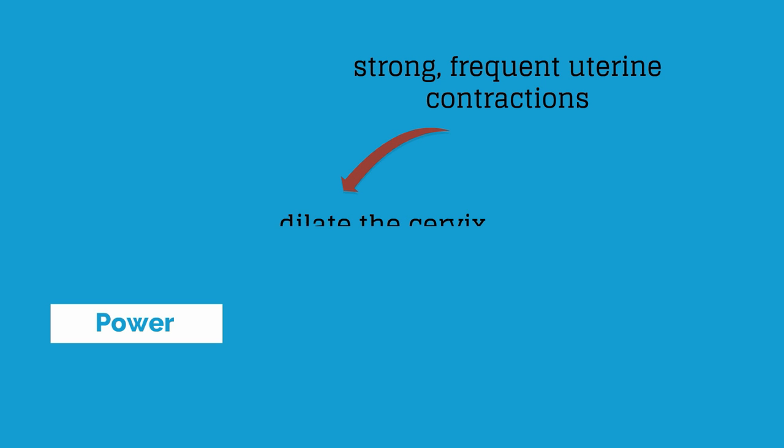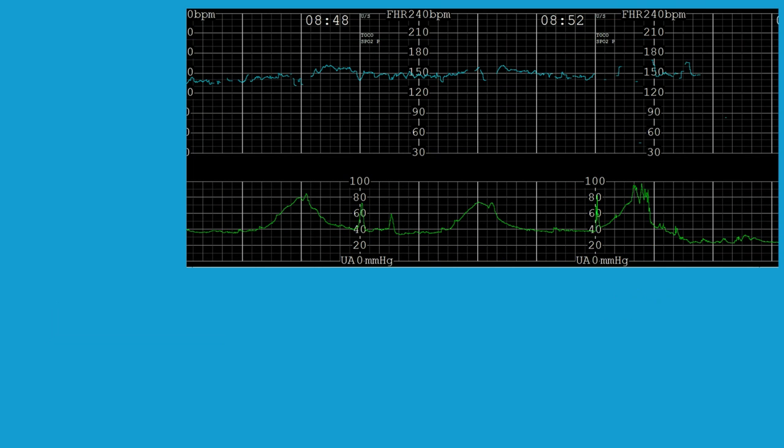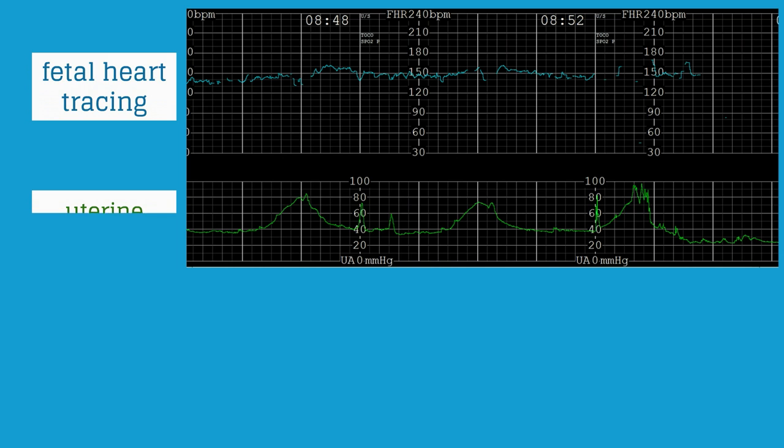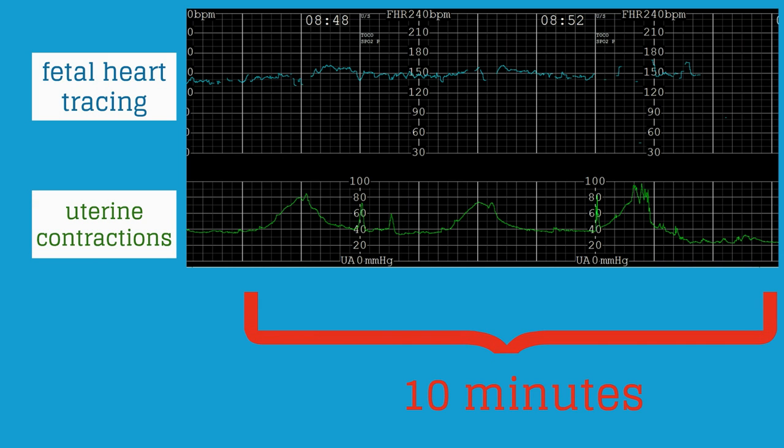The power refers to uterine contractions. The uterus must produce strong, frequent contractions that will dilate the cervix and cause the fetus to descend down. Ideally the uterus should contract 3 times in a 10 minute period. Here is a fetal heart rate tracing and remember that the top line is the fetal heart rate and the bottom line are the uterine contractions. This tracing shows 10 minutes of Labora's labor and she has 3 contractions marked by the white arrows.